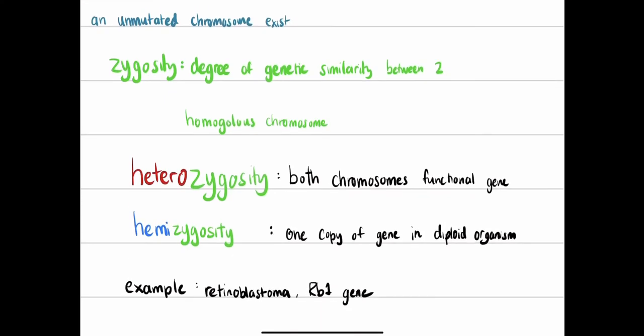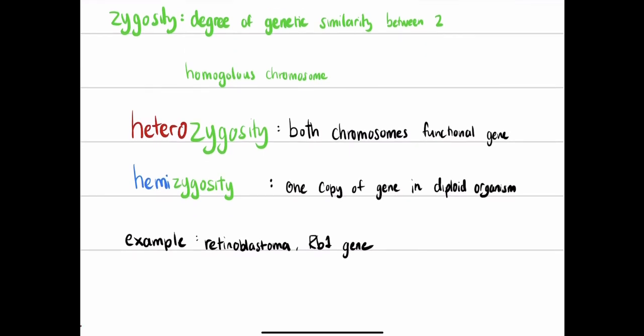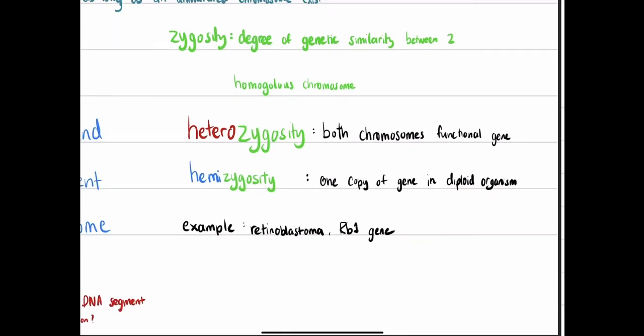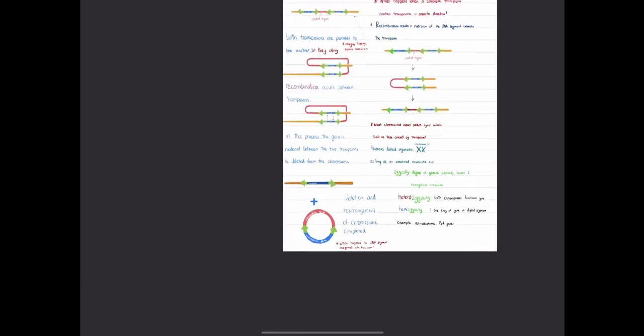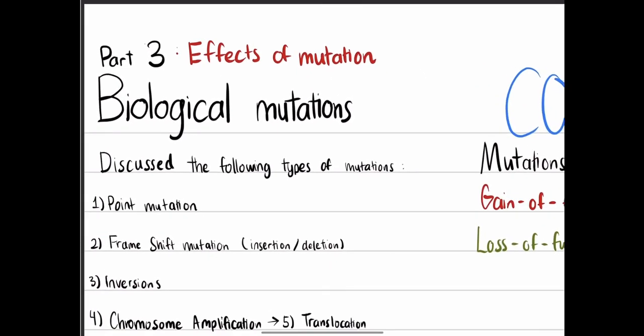An example is hereditary retinoblastoma, caused by suppression of the RB1 gene from one parent. Loss of heterozygosity leads to the formation of non-functional RB proteins, which causes the child to develop retinoblastoma. This is just one example of the effects of mutations, and this will bring us to our next video on the effects of mutations.